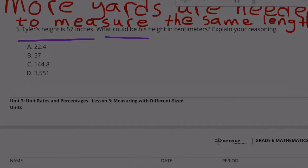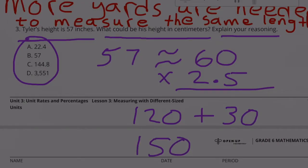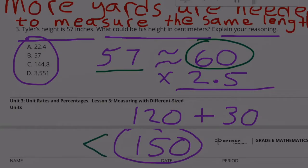Problem 3: Tyler's height is 57 inches. What could be his height in centimeters? Explain your reasoning. Of these choices, which one would be the best answer? There are about 2.5 centimeters for every inch, so 57 is almost 60. So 60 times 2.5 would be 120 plus half of 60, so that's 150. I got the 120 by multiplying 60 times 2, and then I got the 30 by multiplying 60 times 0.5. So we're looking for the answer that's closest to 150.